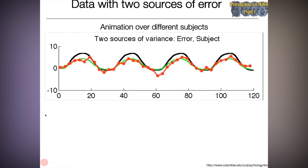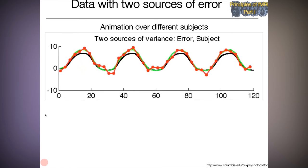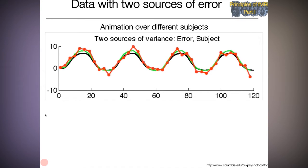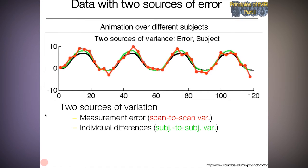Now let's look at the same thing, but with two sources of error. Now the green line is the true response for an individual subject, which is sampled around the black population mean line. And now when we sample the fMRI data, which is the red line, we're sampling with error around the green line.